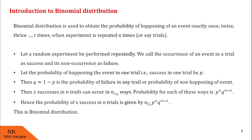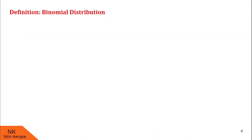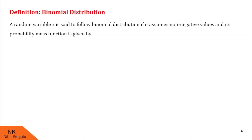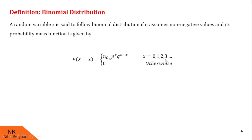Let us see the formal definition of binomial distribution. A random variable x is said to follow binomial distribution if it assumes non-negative values and its probability mass function (PMF) is given by nCx into p raised to x into q raised to n minus x, when x takes values 0, 1, 2, 3, and so on, and it is equal to 0 in other cases. This is called the PMF of the binomial distribution.